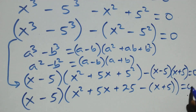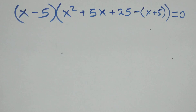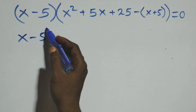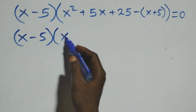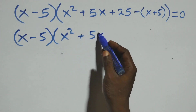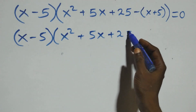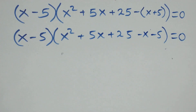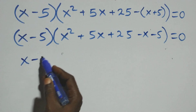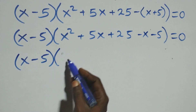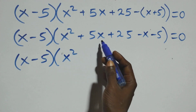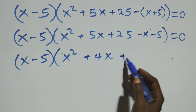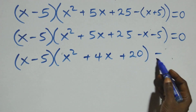Opening the inner bracket: x minus 5 times (x squared plus 5x plus 25 minus x minus 5) equals zero. Combining like terms inside: 5x minus x equals 4x, and 25 minus 5 equals 20. So this becomes x minus 5 times (x squared plus 4x plus 20) equals zero.